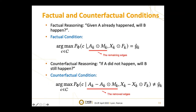To design the algorithm, we first formulate the factual and counterfactual conditions. Factual reasoning asks: given event A already happened, will B happen? In GNN explanations, factual reasoning generates a subgraph such that the GNN prediction will be the same — if the generated explanation satisfies the factual condition, inputting the extracted subgraph into the GNN model should produce the same predicted label as the original graph. For counterfactual reasoning, the question is: if event A didn't happen, will B still happen? Under the context of GNN explanation, without the subgraph, the GNN prediction should be different. To satisfy the counterfactual condition, we use the original graph minus the explanation subgraph as the input, and expect the predicted label to be different.